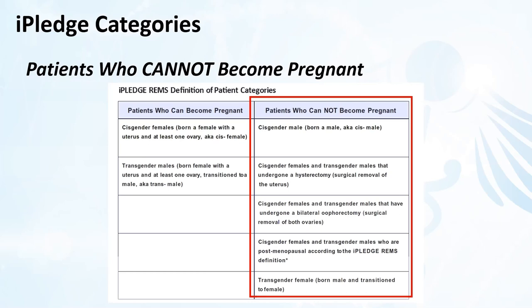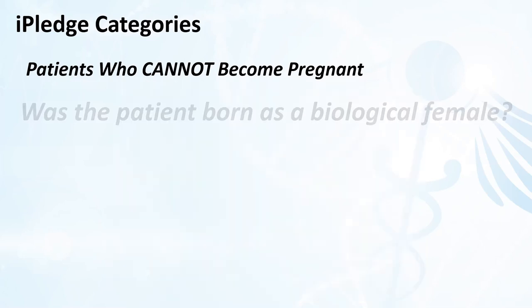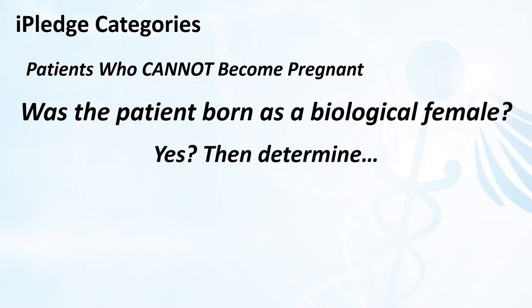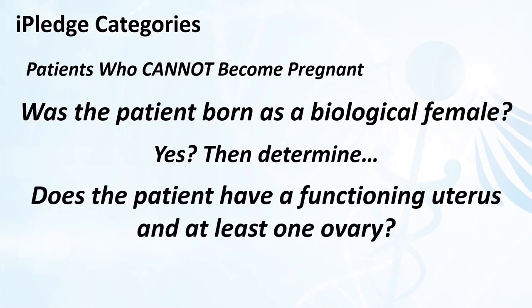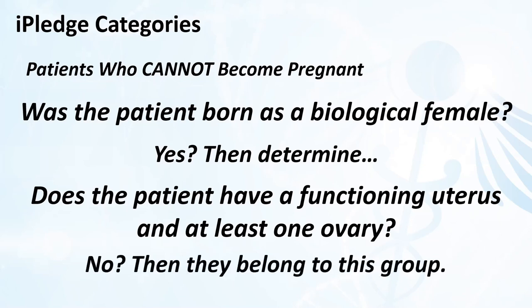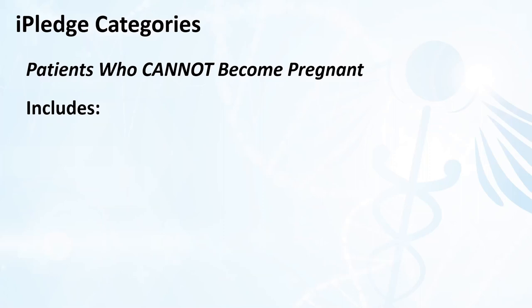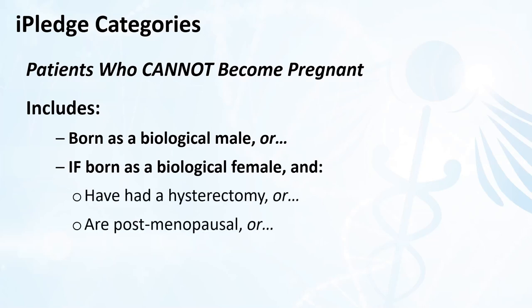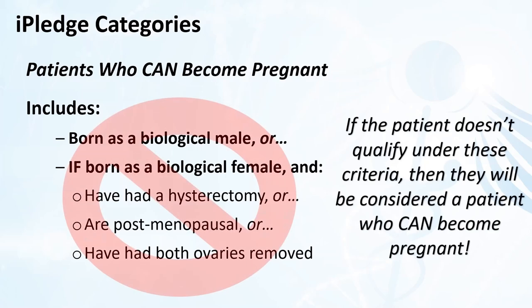Let's start with the easier of the two categories: patients who cannot become pregnant. The descriptions provided by iPledge can get lengthy due to their gender-neutral terminology. Simply consider: was the patient born a biological female? If the answer is no, then no more investigating is needed — patients born biologically male cannot get pregnant. If they were born as a biological female, then the question becomes: does the patient have a functioning uterus and at least one ovary? If the answer is no, they also belong to this group.